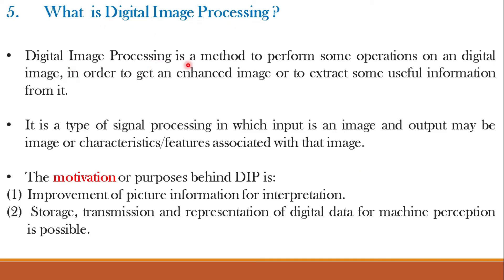Digital image processing is a method to perform some operations on a digital image in order to get an enhanced image or extract some useful information from it. The motivation and purposes behind digital image processing are: improvement of picture information for human interpretation, and storage, transmission, and representation of digital data for machine perception. Digital image processing has all the advantages of digital signal — you can store it easily, transmit it easily, processing is very fast, and machines can easily perceive it.